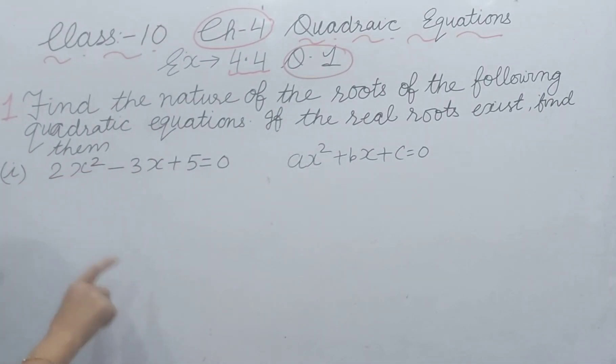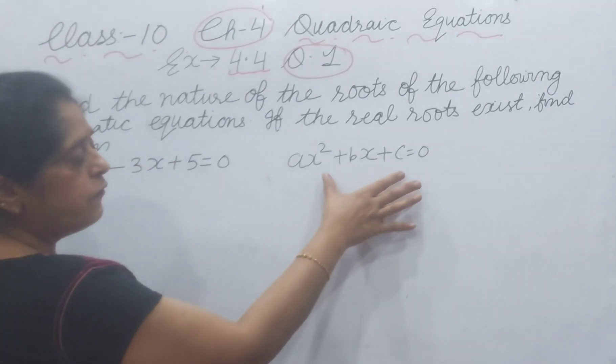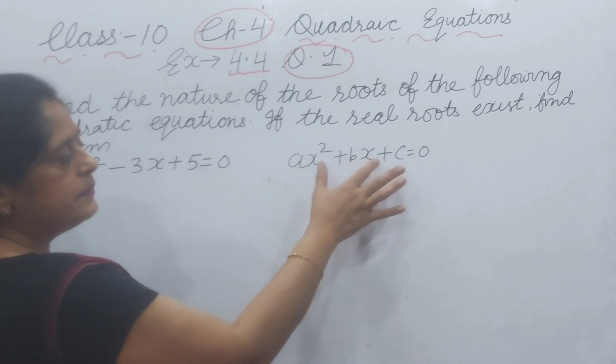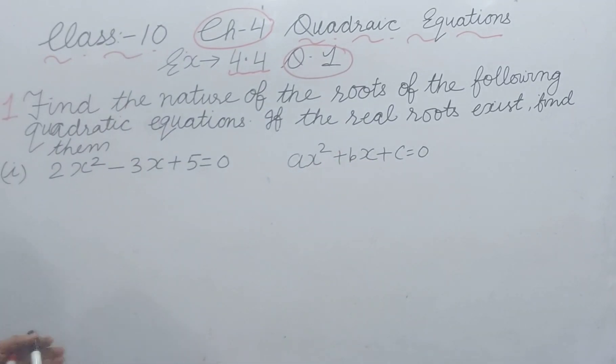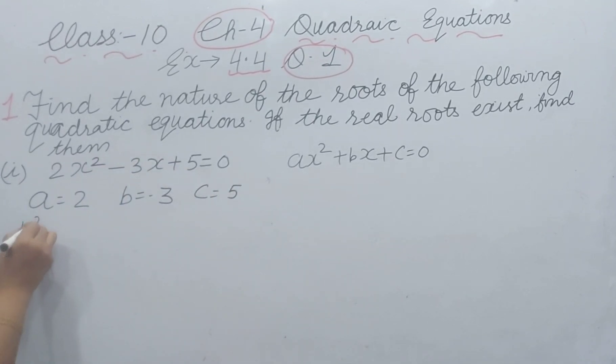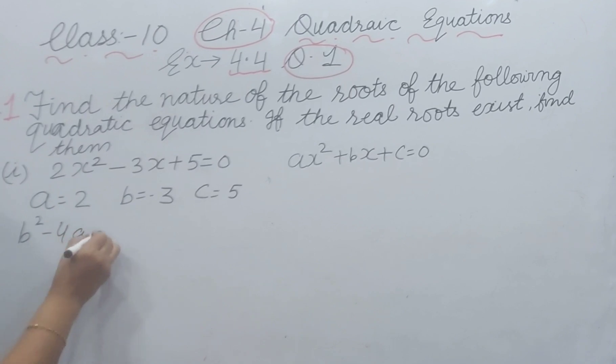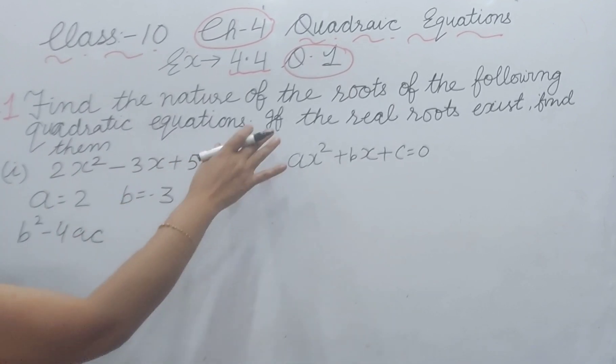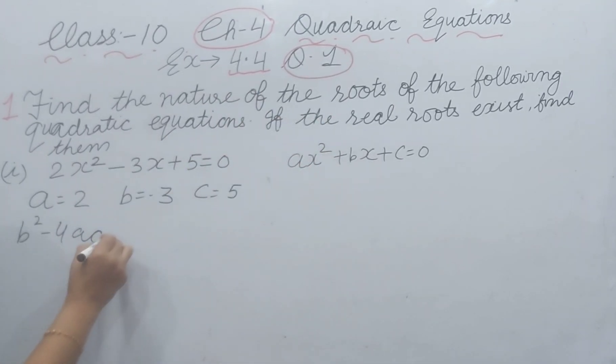First part is 2x² - 3x + 5 = 0. Compare the quadratic equation with the standard form ax² + bx + c = 0. So our a is 2, b is -3, and c is 5. We will find b² - 4ac to determine the type of roots.